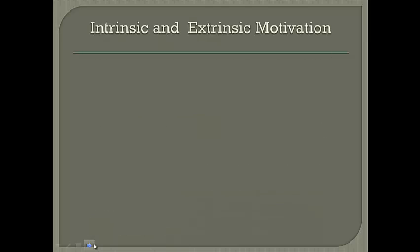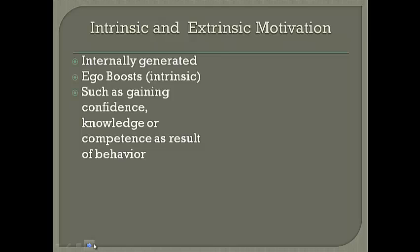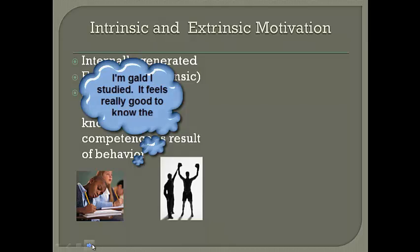A related theory involves intrinsic motivation and extrinsic motivation — two kinds of incentive forces. Intrinsic motivations are internally generated. We might be motivated to feel good about doing something — an ego boost — and get satisfaction from within. This includes gaining confidence, learning a new skill, or gaining new knowledge or competence. For example, studying hard for a test so we feel good about it, or achieving something in athletics.